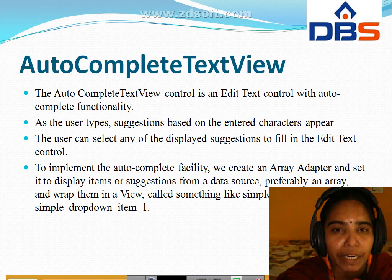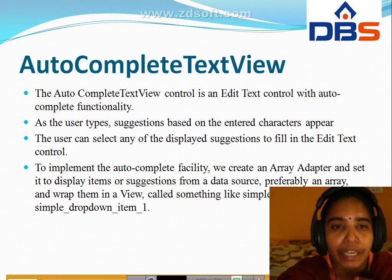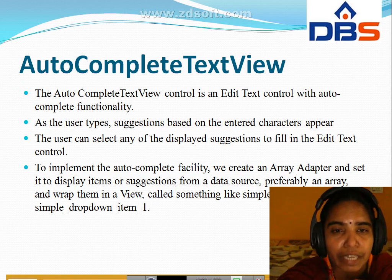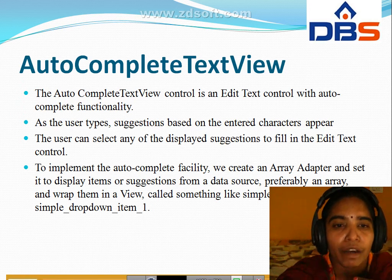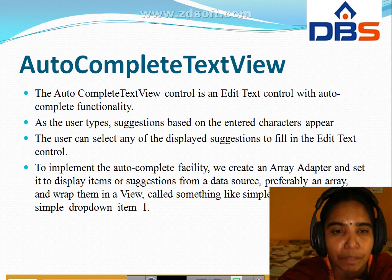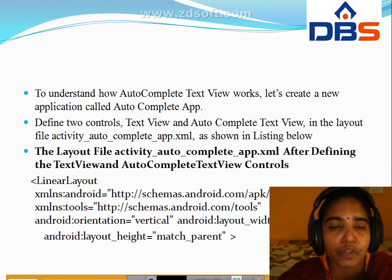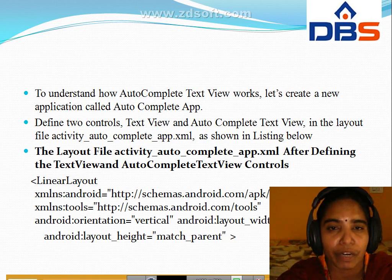The auto complete text view is an edit text control with auto complete functionality. These suggestions are based on the entered characters. The user can select any of the displayed suggestions to fill in the edit text control. To implement this auto complete facility, we create an array adapter to display items from a data source. Next, we need to understand how auto complete text view works.